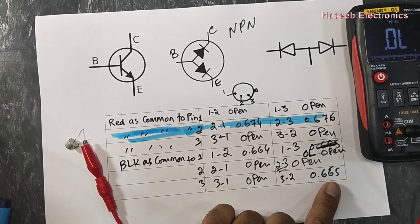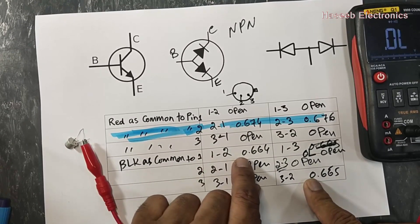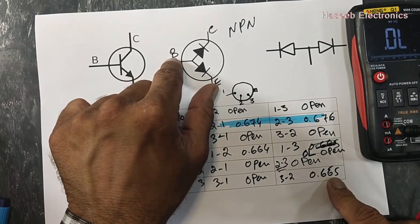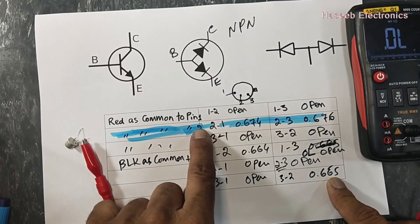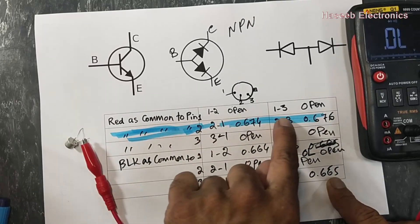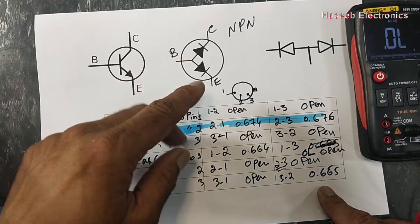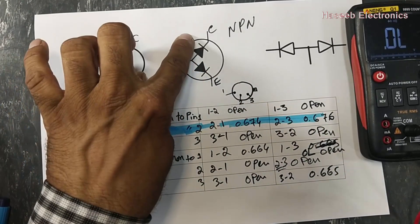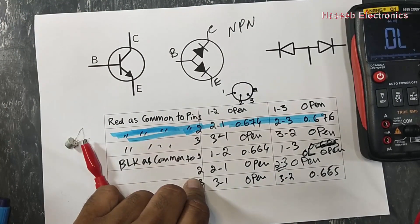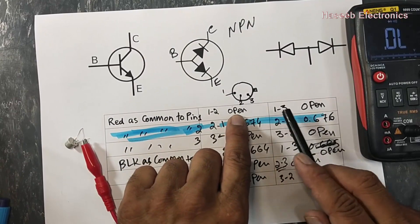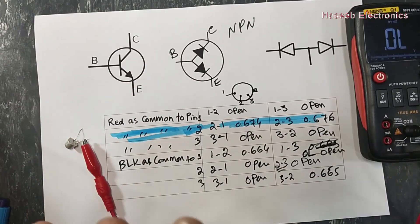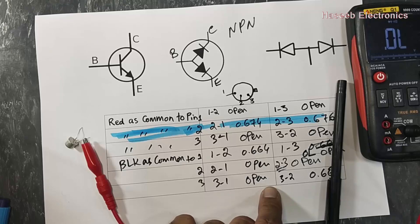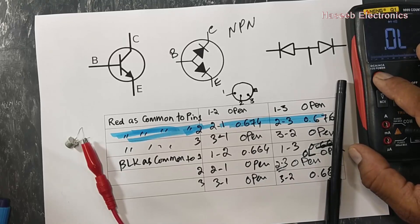The common pin is base, and since we selected red as common, red is positive — confirming NPN. The higher reading of 0.676 is the emitter. So there is no repetition in all these readings. There are just two conditions: in one combination we find forward bias at one junction, in the other combination we find the other junction forward biased. In PNP we find one combination; in NPN we find another. Only two junctions give readings — we have to locate that condition. The other five steps just verify the transistor. I hope this is clear. If you have any questions, kindly let me know in the comment box. Thanks for watching. Assalamualaikum warahmatullahi wabarakatuh.